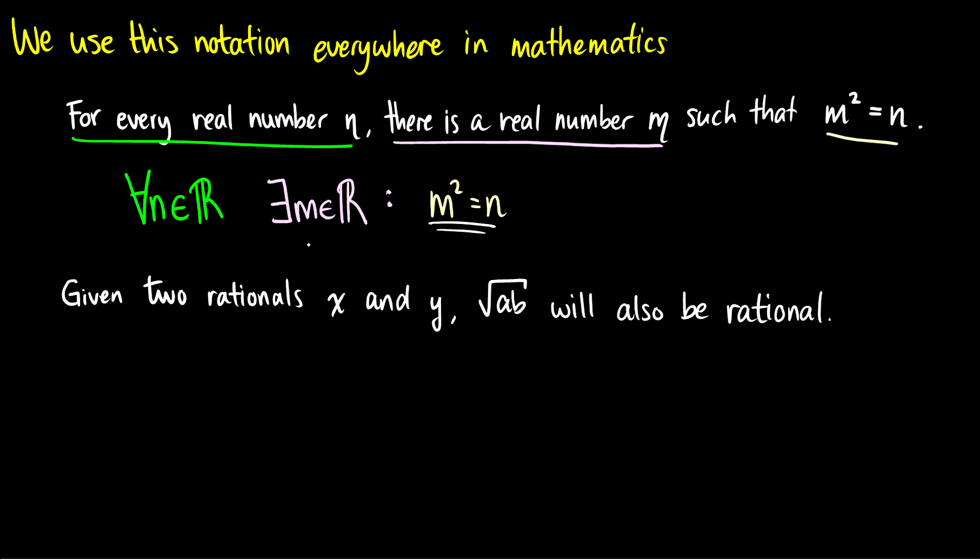Let's take a look at the second one. Given two rationals x and y, the square root of x,y will also be rational. Now this doesn't look like there's any universals here, does it? But there really is one here in disguise. So given two rationals x and y, what this says is given any two rational numbers. So this is for all x, y in the set of rational numbers, which is the Q there, the square root of x,y will also be rational.